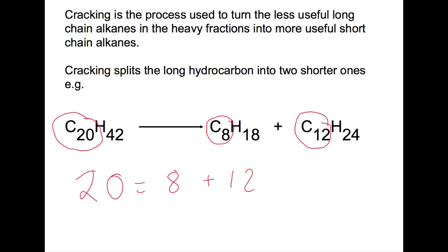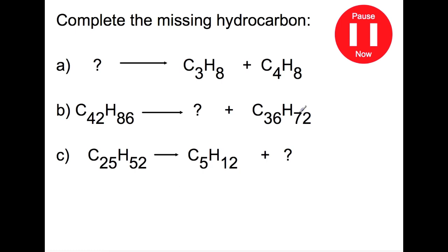Our hydrocarbons started with 42 hydrogens and this splits up into 18 hydrogens and 24 hydrogens and again you can see that these two add up. Pause the video now and try these questions.